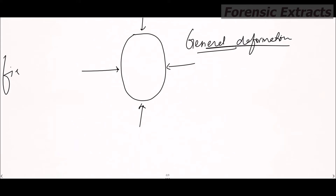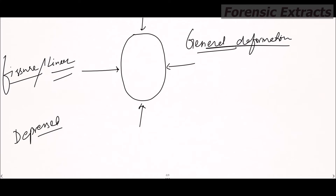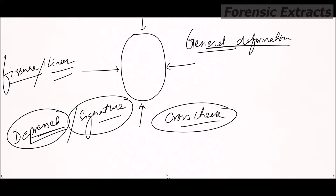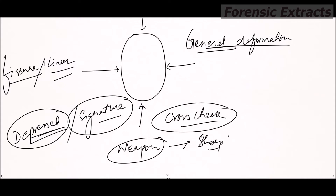The most common type of fracture is the fissure fracture, also known as a linear fracture. The second type is the depressed fracture, also known as a signature fracture. It is called a signature fracture because the shape of the fracture can be correlated with the shape of the weapon, making it potential evidence for identifying the alleged weapon of offense.